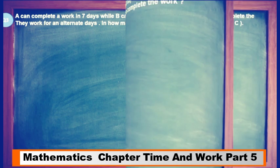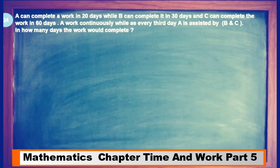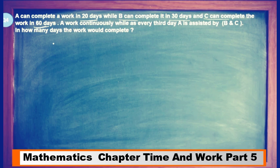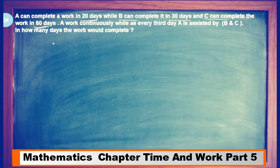Now let's move to problem number 4. A can complete a work in 20 days, B can complete it in 30 days, and C can complete it in 60 days. A works continuously while every third day A is assisted by B and C. In how many days will the work be complete?